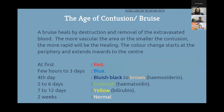The age of a bruise is determined by color changes. A bruise heals by destruction and removal of extravasated blood — the more vascular the area, the more rapid the healing. Color changes start at the periphery and extend toward the center. Day one: red. A few hours to three days: blue. Four days: bluish-black to brown due to haemosiderin. Five to six days: greenish due to haemosiderin. Seven to twelve days: yellow due to bilirubin. Two weeks: normal skin color.